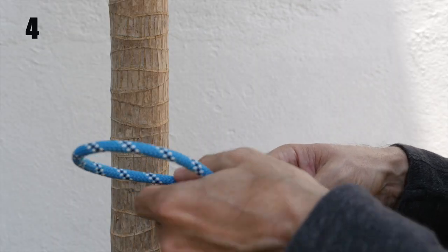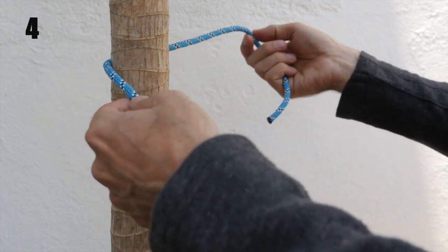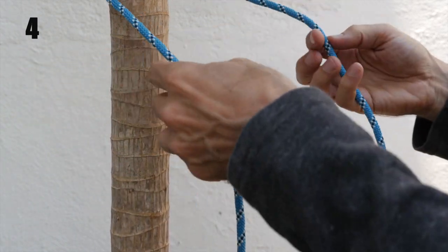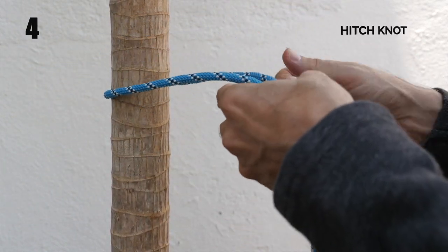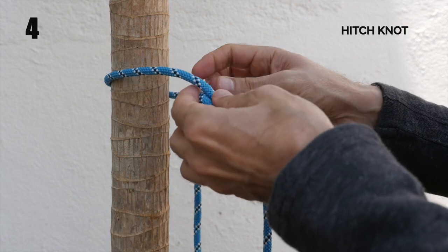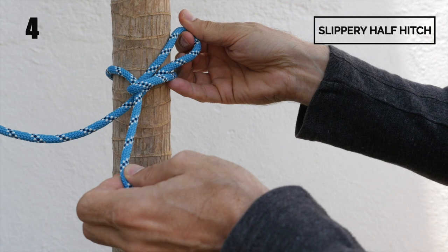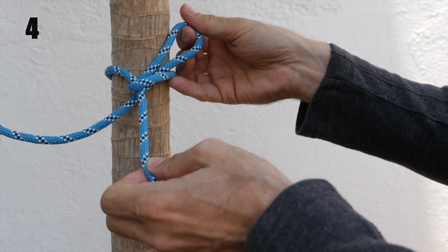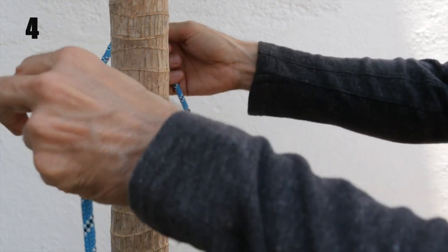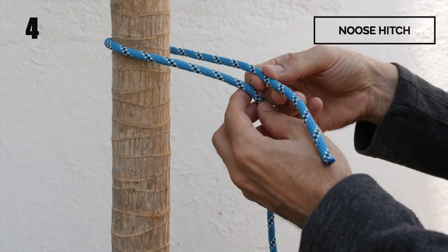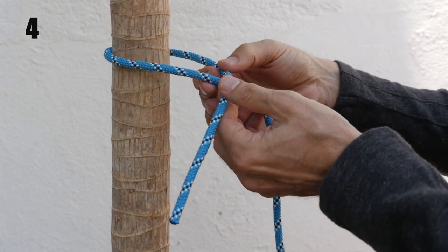If we use either of those adjustable loops and tie them around an object, then we create what's called a hitch knot. And the slip knot that we tied just a moment ago becomes what's known as the slippery half hitch. And the noose is still just called a noose, but is now also a hitch knot.